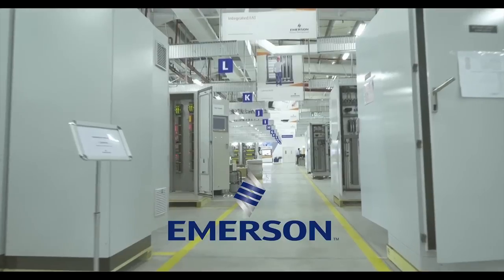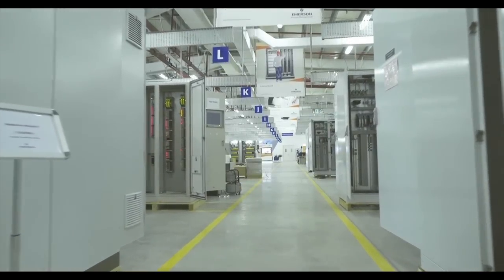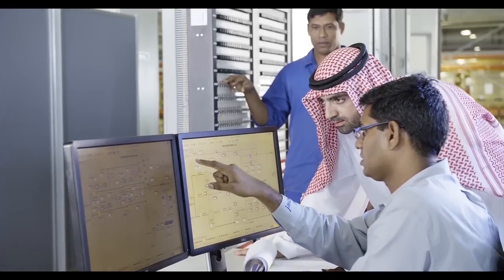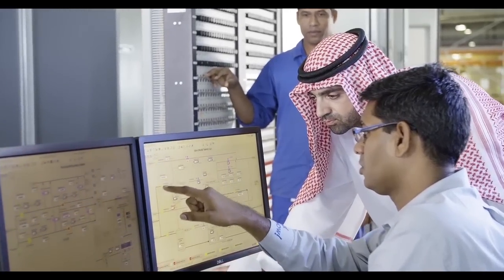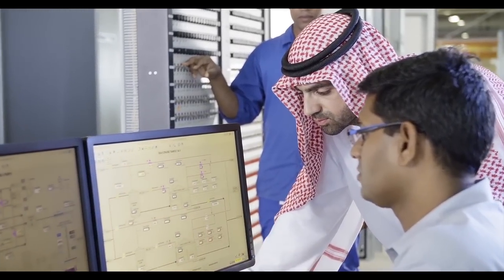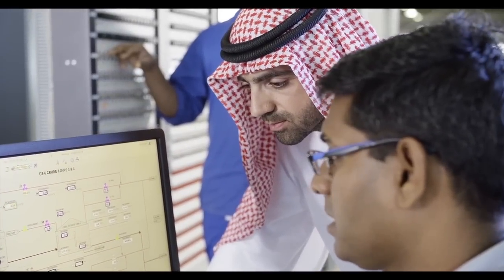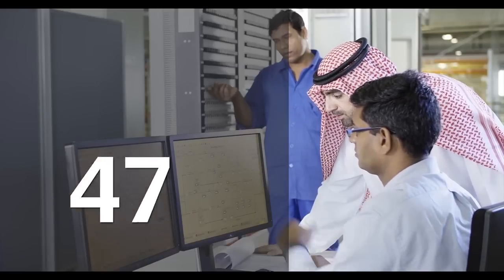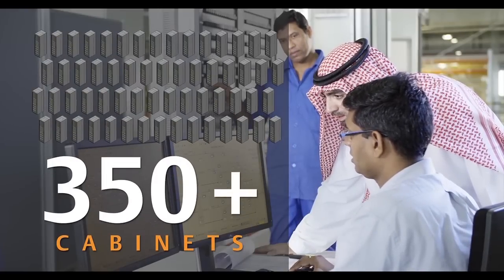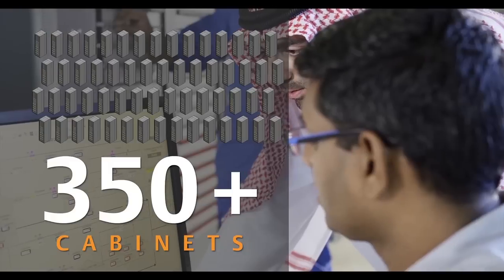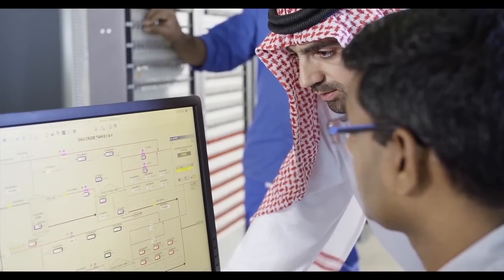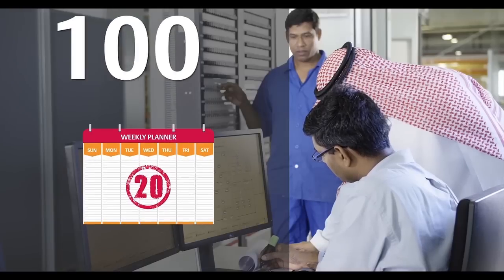Emerson's system staging facilities in the Middle East are the largest of their kind in the world and are dedicated to solving your toughest process automation challenges. With the capability to accommodate over 350 cabinets simultaneously, our facility can stage mega automation projects and still deliver smaller automation projects with 1000 IOs in 10 weeks or less.